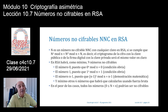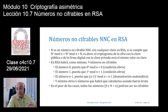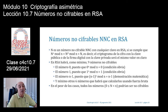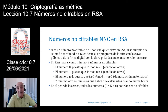¿Qué va a suceder si esas claves no son el mínimo, sino que son un número relativamente grande: 40, 50, 4.000, 15.000? ¿Es posible que todos los números del grupo N vayan en claro?